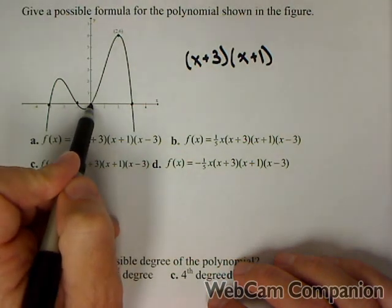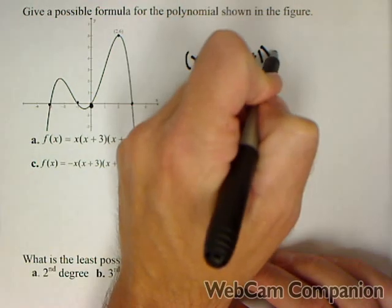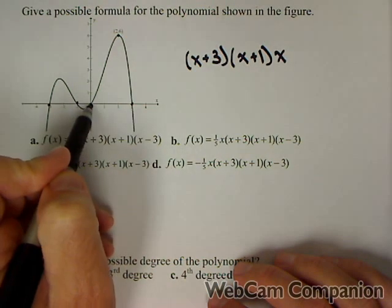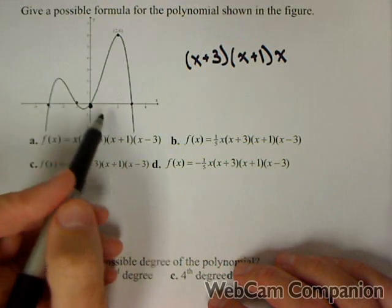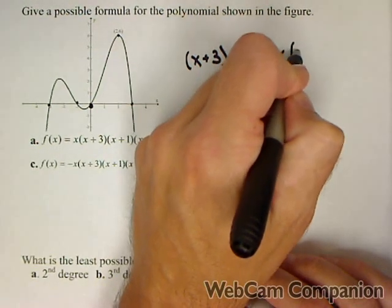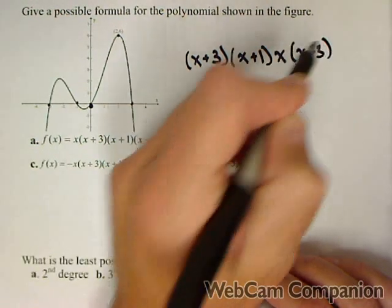If zero is a zero, this is one that gets forgotten a lot, then x must be a factor. Because that means if I put in zero, I get zero for the whole thing. Finally, we have three, so that means x minus three must be a factor.